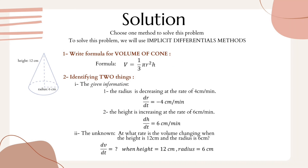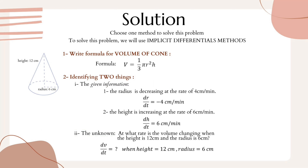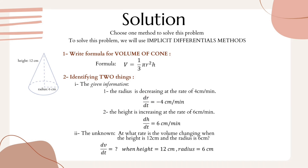The second step is to identify the given and unknown information. For the given information: the radius is decreasing at the rate of 4 centimeters per minute, so we write dr/dt = −4. It is negative because the radius is decreasing. The term dr/dt represents the first derivative of radius with respect to time, showing how the radius changes with time. Also, the height is increasing at the rate of 6 centimeters per minute, so dh/dt = 6.